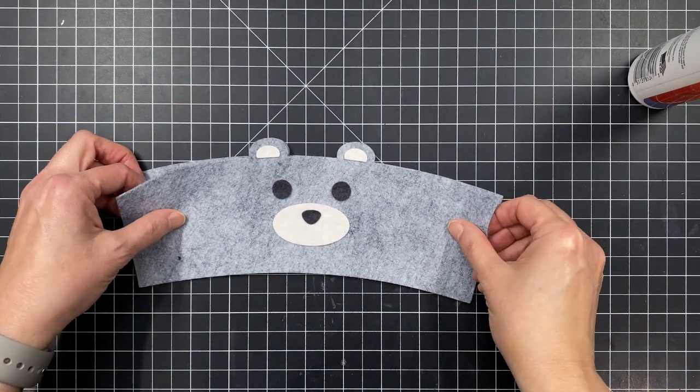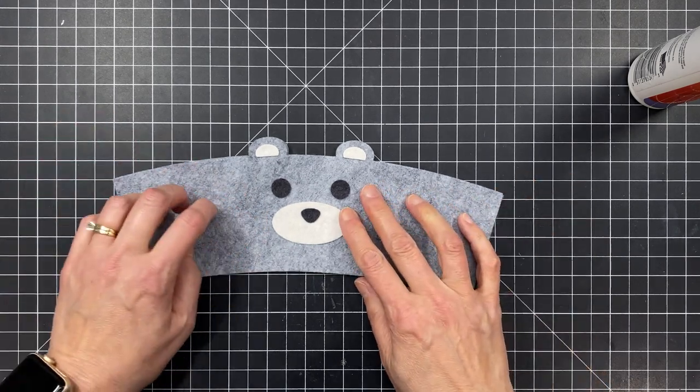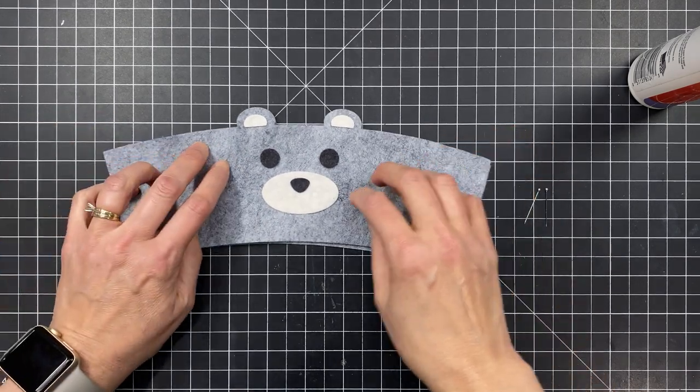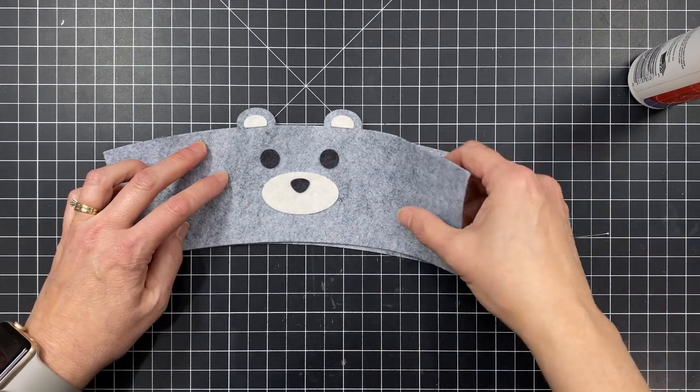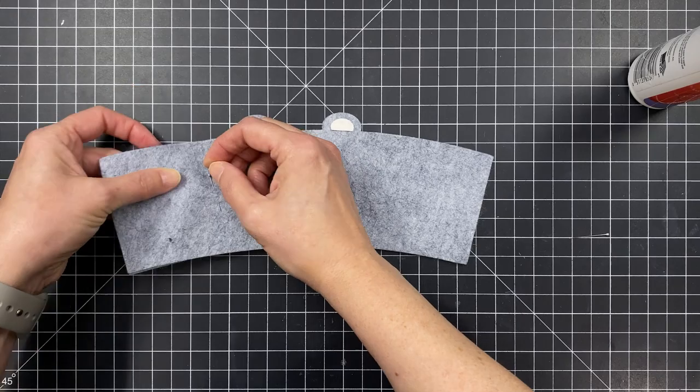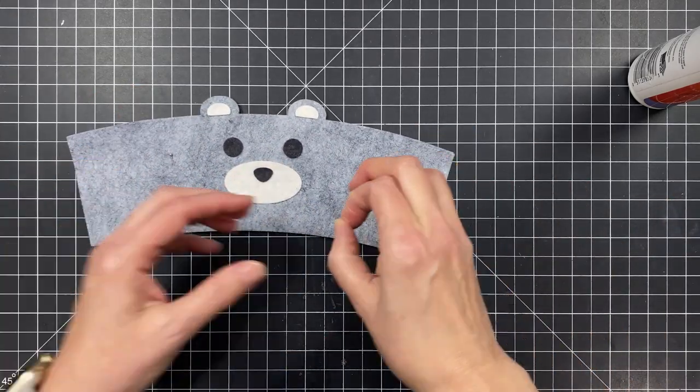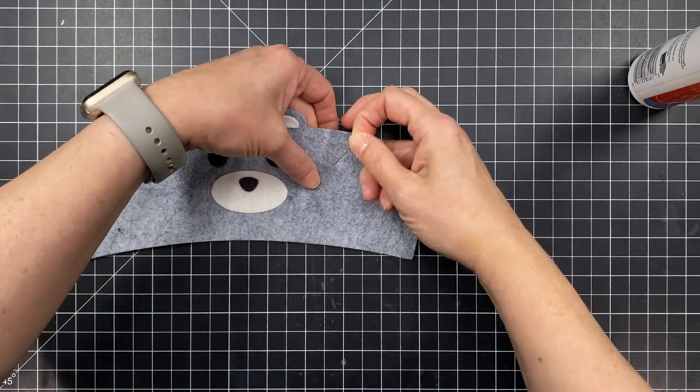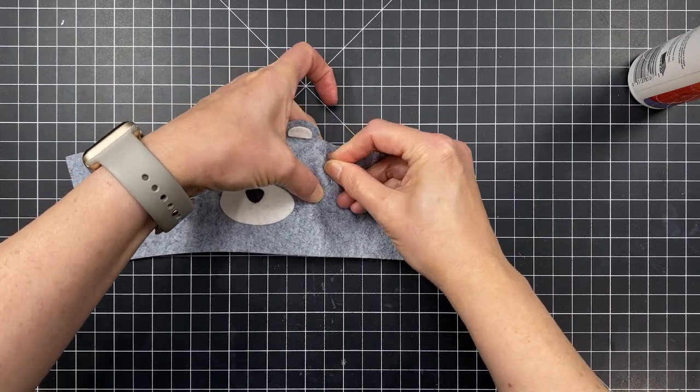And so once that's dry, I'm ready to sew my two layers of felt together. I like to put the little eyes and the nose and all that stuff on separately in case I want to do any decorative embroidery stitching around those pieces and do actual applique work.